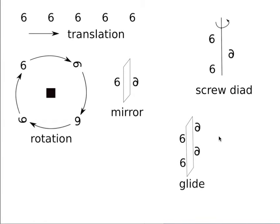In addition to rotation axes I discussed the mirror plane, the glide plane where you reflect and then translate a fraction of the repeat distance, and a screw axis which means a rotation plus a translation at the same time.